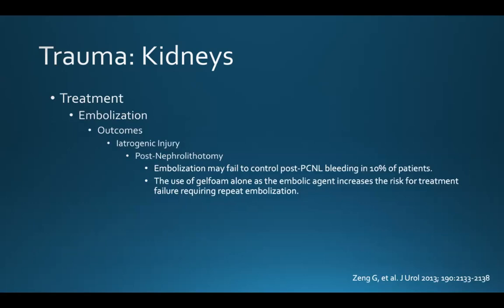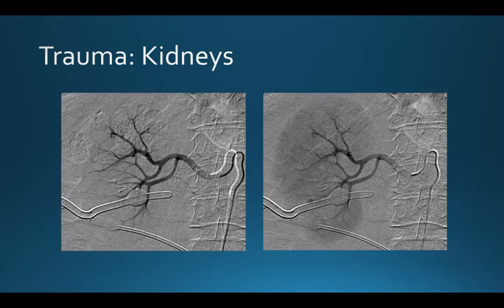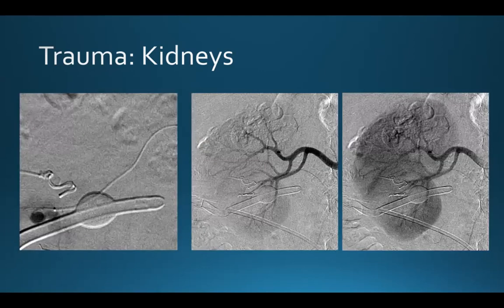Embolization can also be performed after nephrolithotomy, and will be largely successful, though it may fail in about 10% of patients. The use of gel foam alone increases the risk of treatment failure, so that agent is not advised in this setting. Here's a case example: a patient experiencing bleeding after the procedure had a pseudoaneurysm visible near the Foley catheter. A microcatheter was advanced to the area of arterial injury and micro coils were used to embolize the vessel. The key point is to get as distal as possible to save as much kidney as possible.